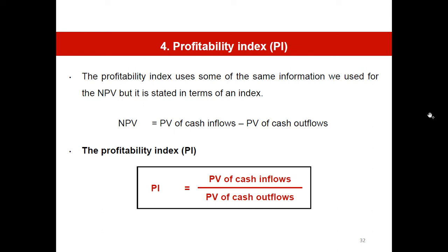The fourth indicator is the Profitability Index. It is very similar to NPV, but when you look at NPV you use a minus sign. In the case of the Profitability Index, the word 'index' means divide. So the Profitability Index is the present value of cash inflows divided by the initial investment, instead of subtracting them as in NPV.